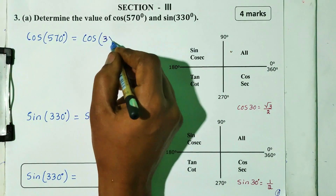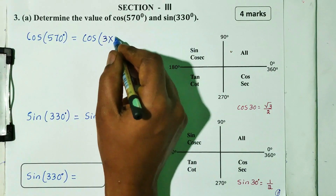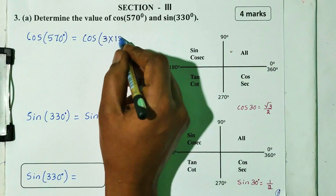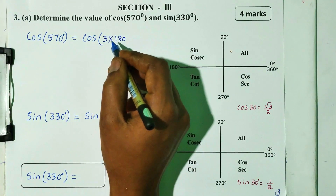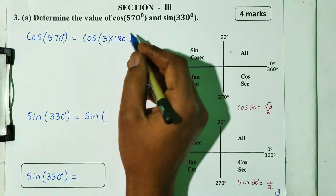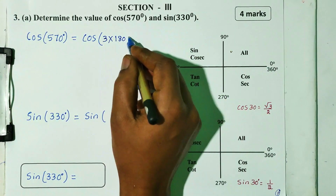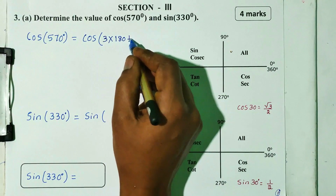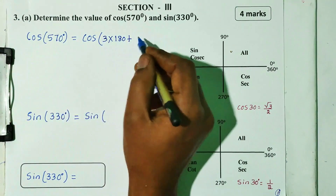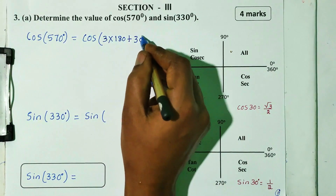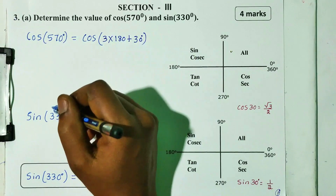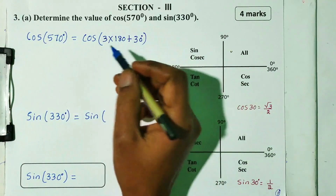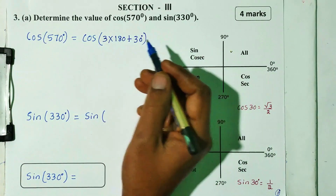3 into 180. So, 180 into 3 is 540. So, 540 plus 30 gives us 570. So we add 570.